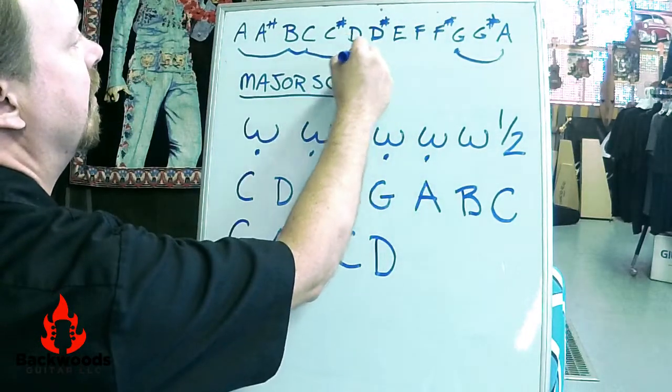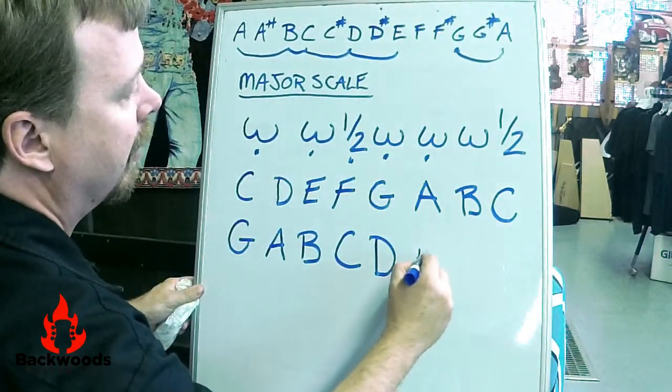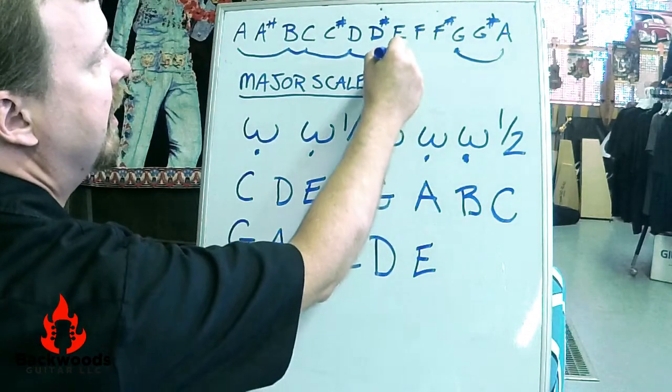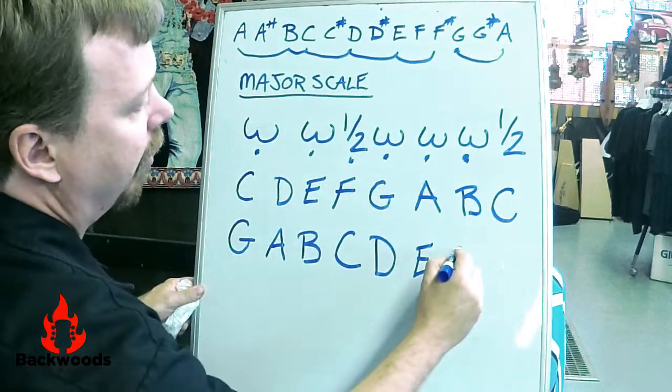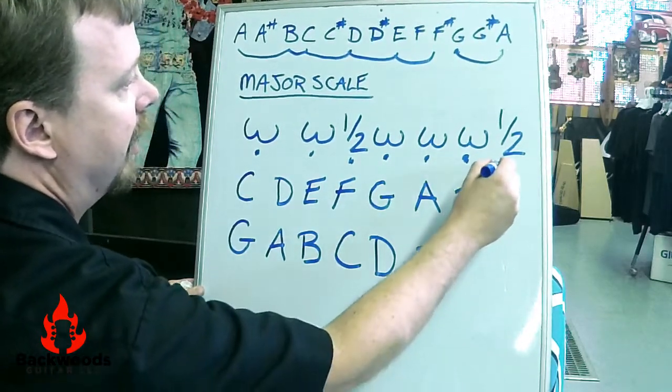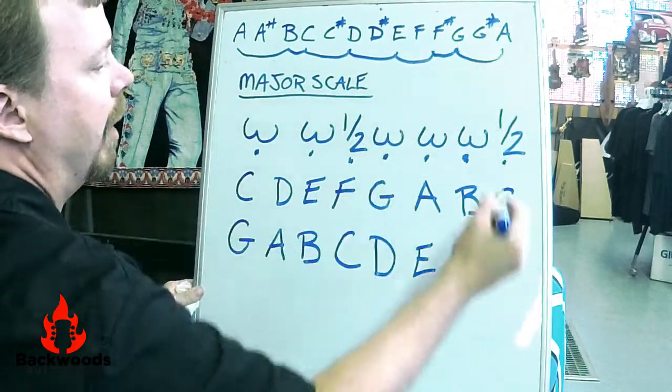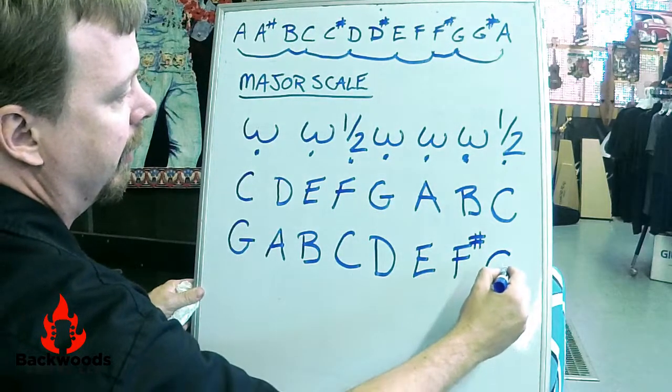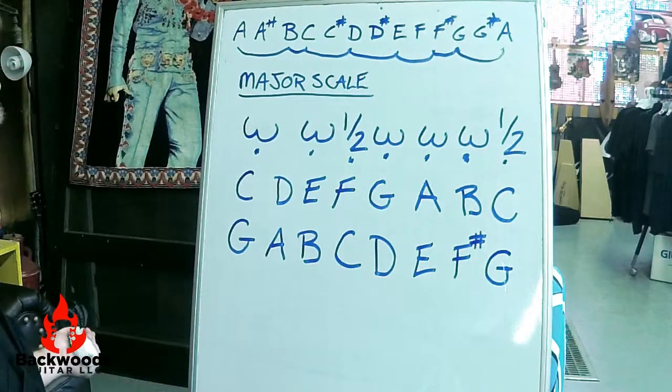Whole step from D gives you E. Whole step from E gives you F sharp. And then half step from F sharp right back at G. Pretty easy, right?